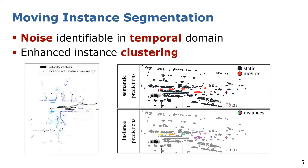State-of-the-art methods often address the task of moving instance segmentation separately as moving object segmentation and instance segmentation. To overcome this and address the difficulty that all objects belong to the same semantic class, we further propose an enhanced clustering approach to incorporate essential instance information within our network.